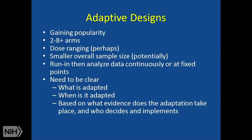I'm going to spend several minutes on adaptive designs because they're gaining a lot of popularity. Here you might have two to eight different arms — sometimes dose-ranging, sometimes not. People think that adaptive designs always result in a smaller overall sample size, but sometimes you have a larger overall sample size — at least you were able to do it in one trial. A lot of these have a run-in period, and then you start analyzing data continuously or at fixed points. For any adaptive design — and there are 30-plus different versions — you need to be clear: what is being adapted, when are you going to adapt it, based on what evidence, who decides the adaptation is needed, and how is it implemented?